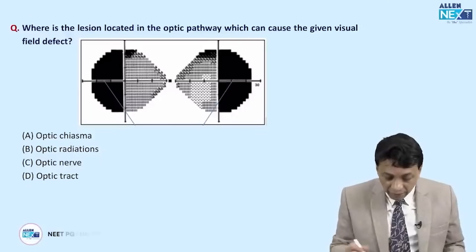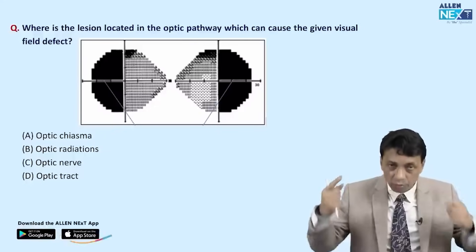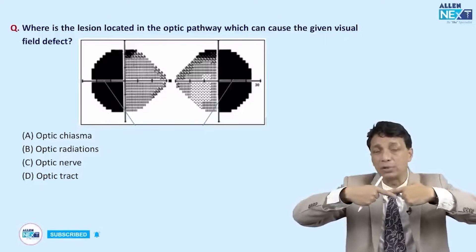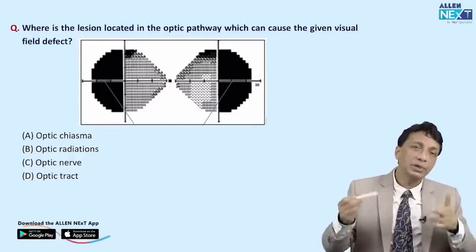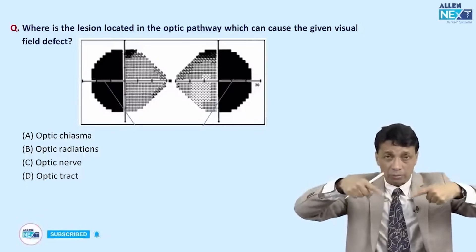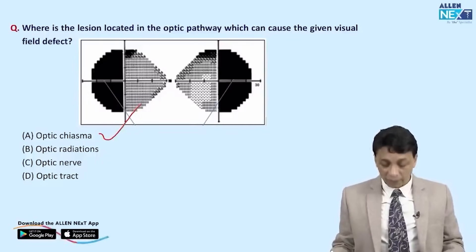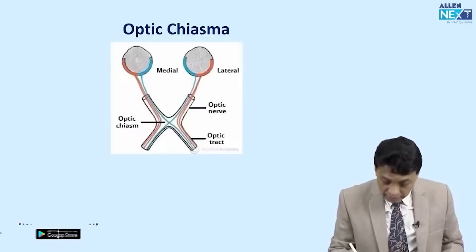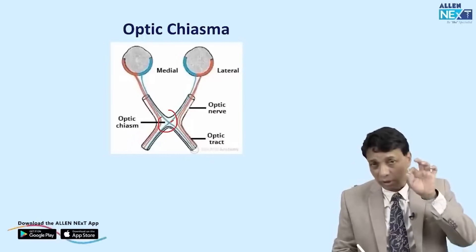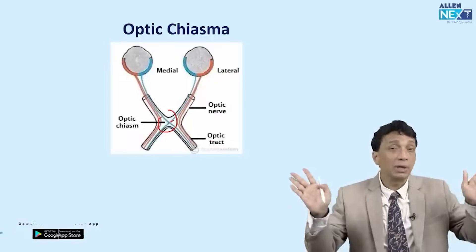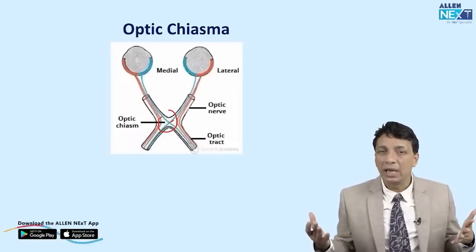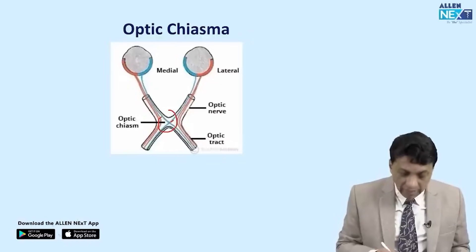A visual field defect shows loss of both temporal fields — bitemporal hemianopia. Both nasal fibers must be damaged. Nasal fiber damage can only occur where both nasal fibers come close together — at the optic chiasm. The two nasal fibers cross at the chiasm; a small lesion there compresses both and causes bitemporal hemianopia. The answer is the optic chiasm, and the most common chiasmal lesion causing bitemporal hemianopia is a pituitary adenoma.